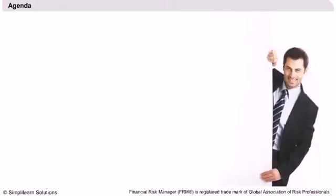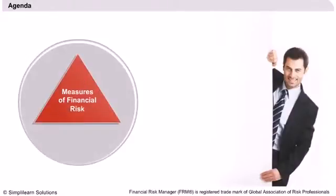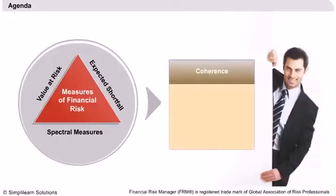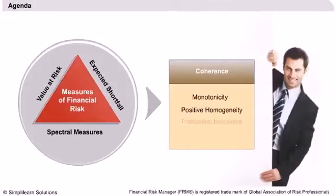The main agenda of our discussion will be the three measures of financial risk: value at risk, expected shortfall, and spectral measures. We will also compare them and see how they satisfy the coherence condition for measuring risk. This concept of coherence is completely new to our studies and is a very important condition for measuring financial risk. The four properties of coherence that we will cover are monotonicity, positive homogeneity, translation invariance, and sub-additivity. Let us begin by first reviewing the Mean Variance Framework and VAR.